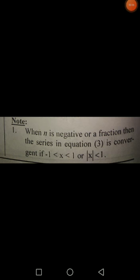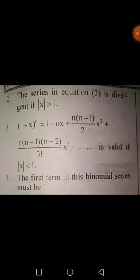Important notes: When n is negative or a fraction, the series is convergent if |x| < 1, and divergent if |x| > 1. The expansion (1 + x)^n = 1 + nx + [n(n-1)/2!]·x^2 + ... is valid for |x| < 1. Also, the first term of a Binomial Series must be 1.